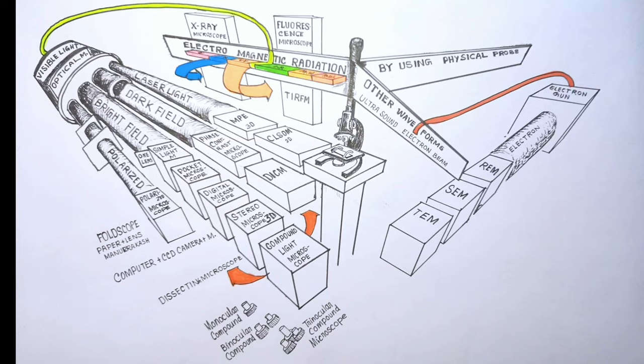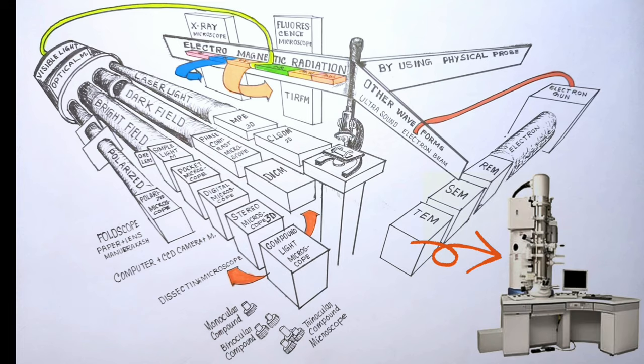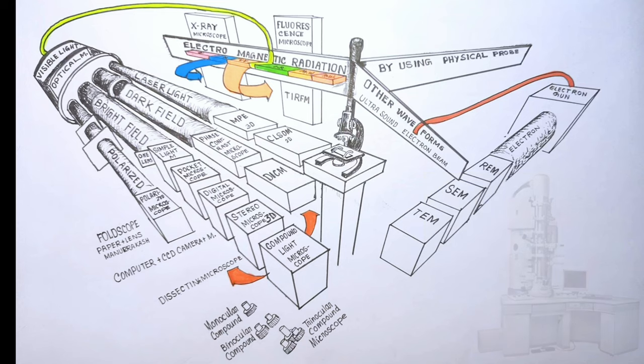Let's look at TEM. It is the original electron microscope. In a TEM, a beam of electrons hits a very thin sample. The electrons are transmitted through the sample and then the transmitted electrons hit a fluorescent screen that forms an image.